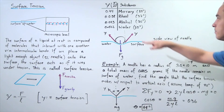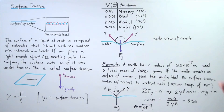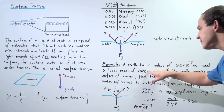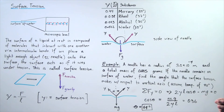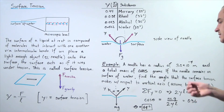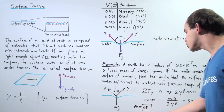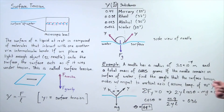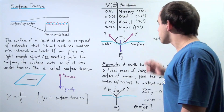Substituting the values: γ = 0.072 N/m, M = 0.005 g converted to kilograms, g = 9.8 m/s², and L = πR where R = 3 × 10⁻⁴ m, we get cos(θ) = 0.36. Taking the inverse cosine of 0.36 gives an angle of 69 degrees. So both surface tension angles are 69 degrees.